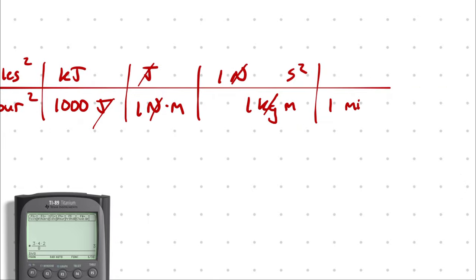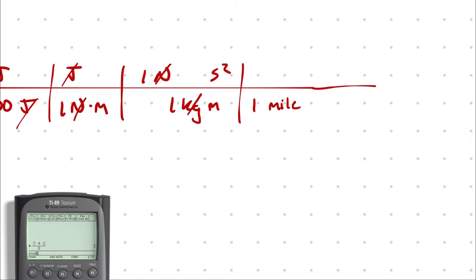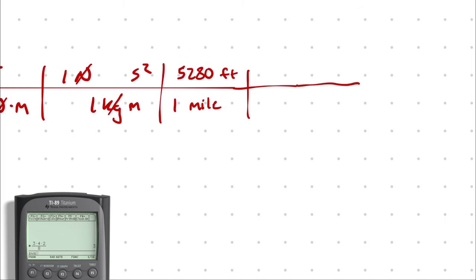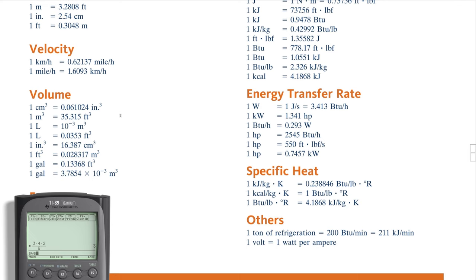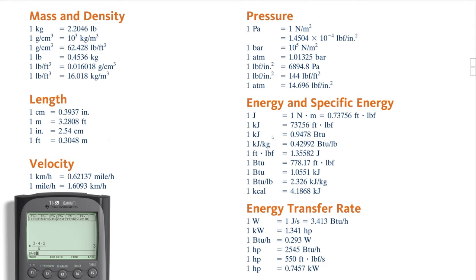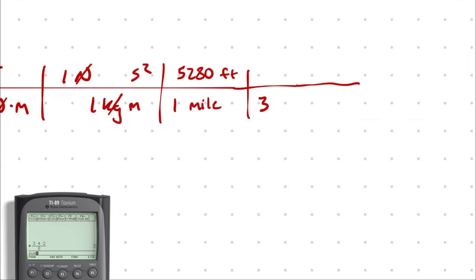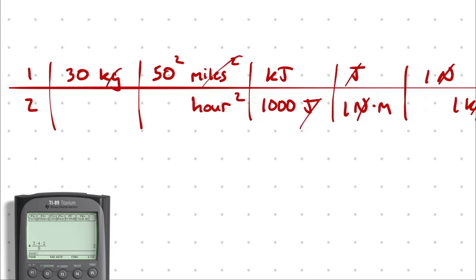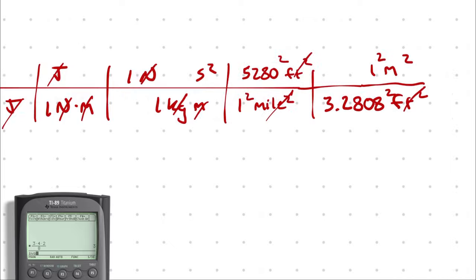I know one mile is 5,280 feet. And I know that there are 3.2808 feet in a meter. And if I square each of these terms, I'm still multiplying by one. So it's just fine. Feet squared cancels feet squared. Mile squared cancels miles squared. And meters and meters cancel meters squared.